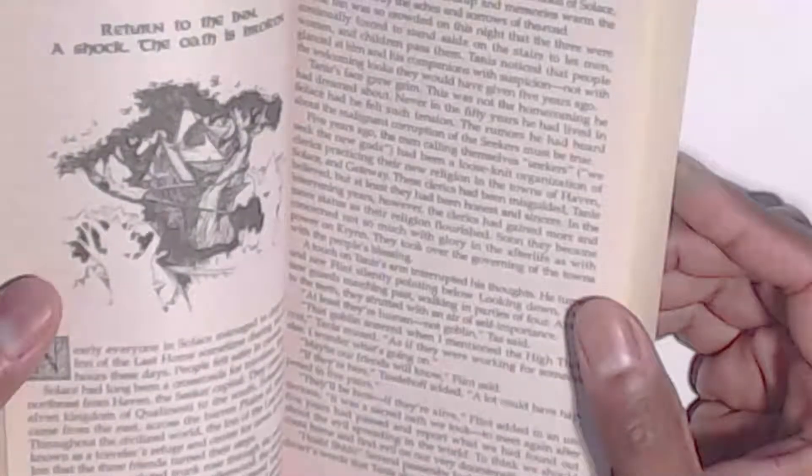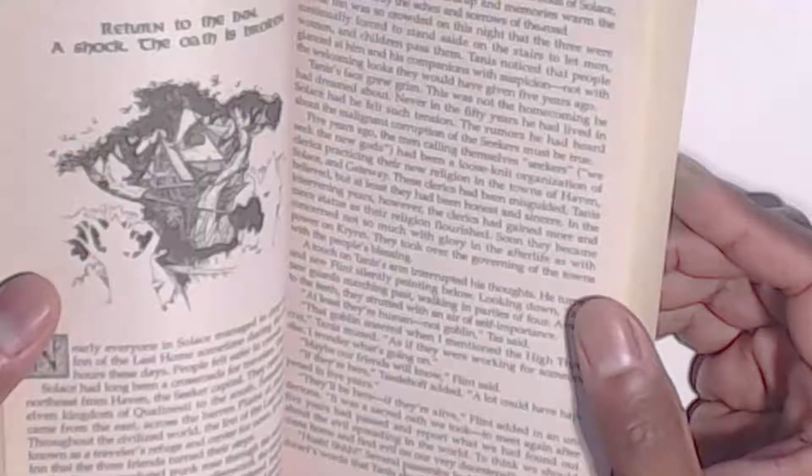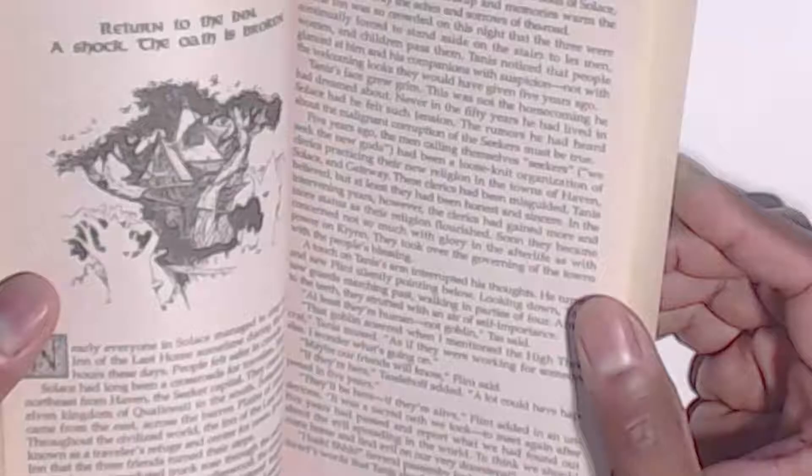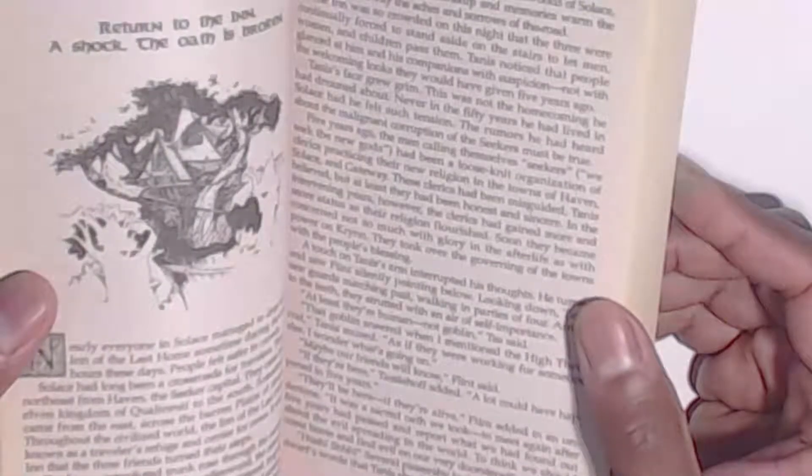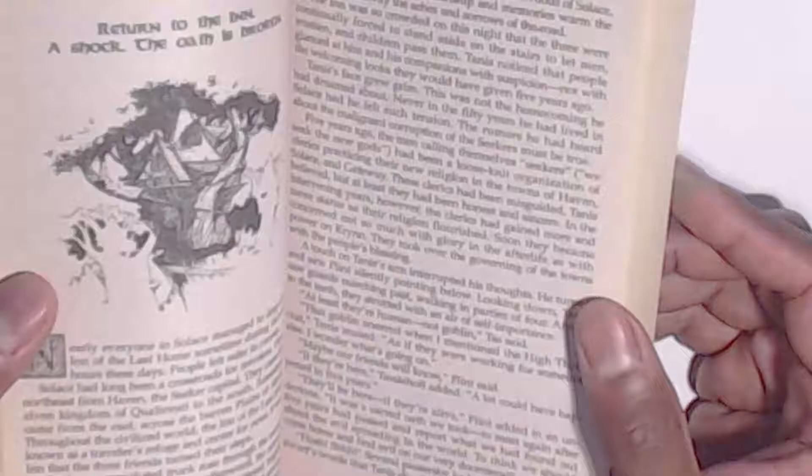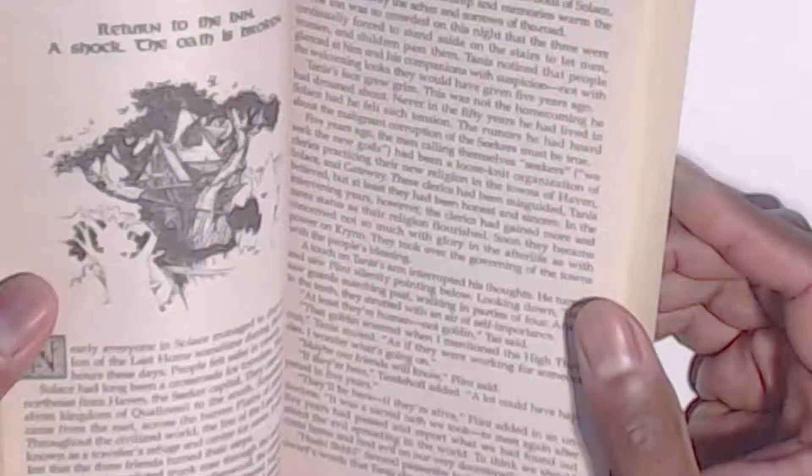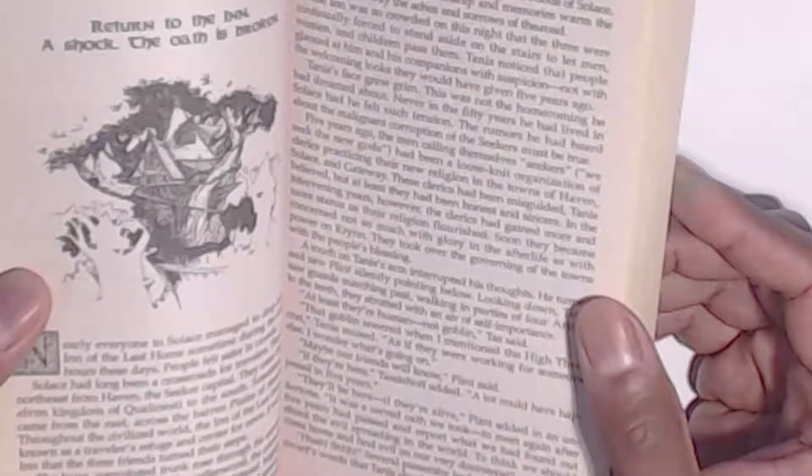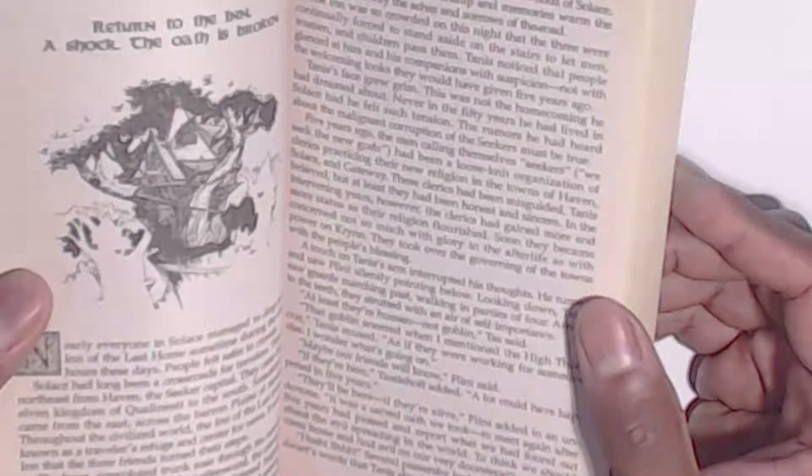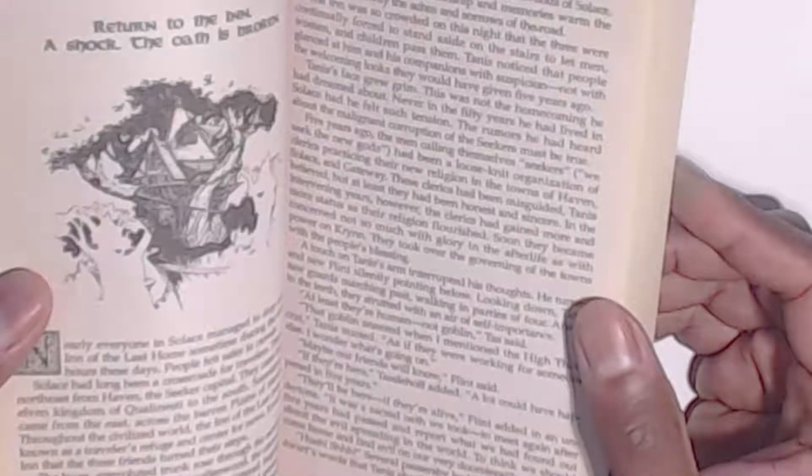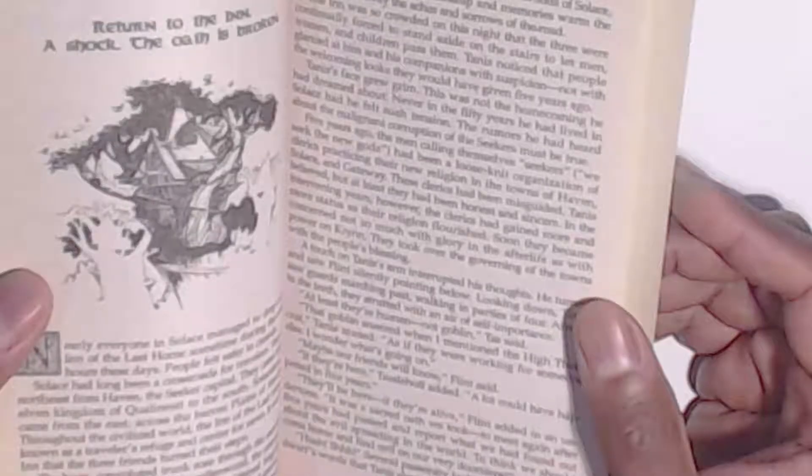The inn was so crowded on this night that the three were continually forced to stand aside on the stairs to let men, women, and children pass them. Tanis noticed that the people glanced at him and his companions with suspicion, not with the welcoming looks they would have given five years ago. Tanis' face grew grim. This was not the homecoming he had dreamed about. Never in the fifty years he had lived in Solace had he felt such tension. The rumors he had heard about the malignant corruption of the Seekers must be true.